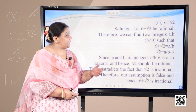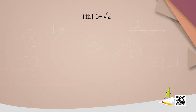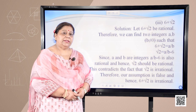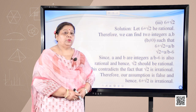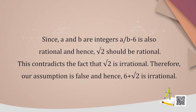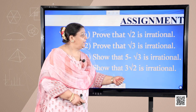Next, prove that 6 + √2 is irrational. Let 6 + √2 be rational. Therefore we can find two integers a and b, b not equal to 0, such that 6 + √2 = a/b, which gives √2 = a/b − 6. Since a and b are integers, a/b − 6 is also rational, and hence √2 should be rational. This contradicts the fact that √2 is irrational, therefore our assumption is false and 6 + √2 is irrational.